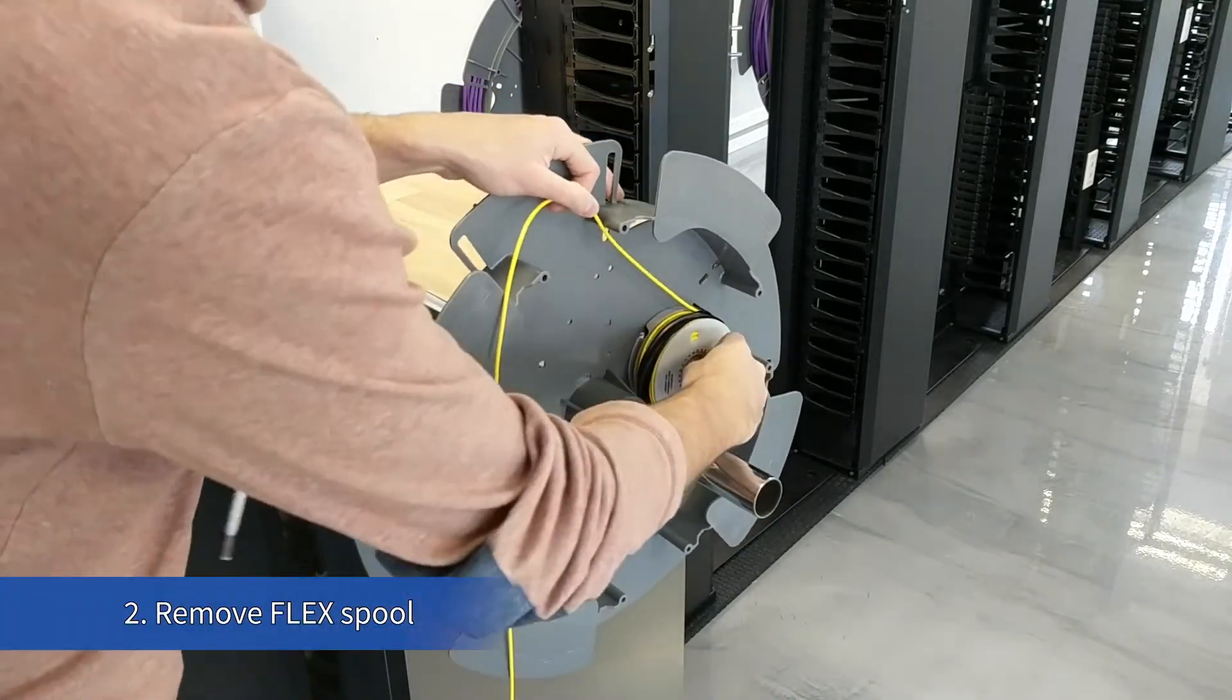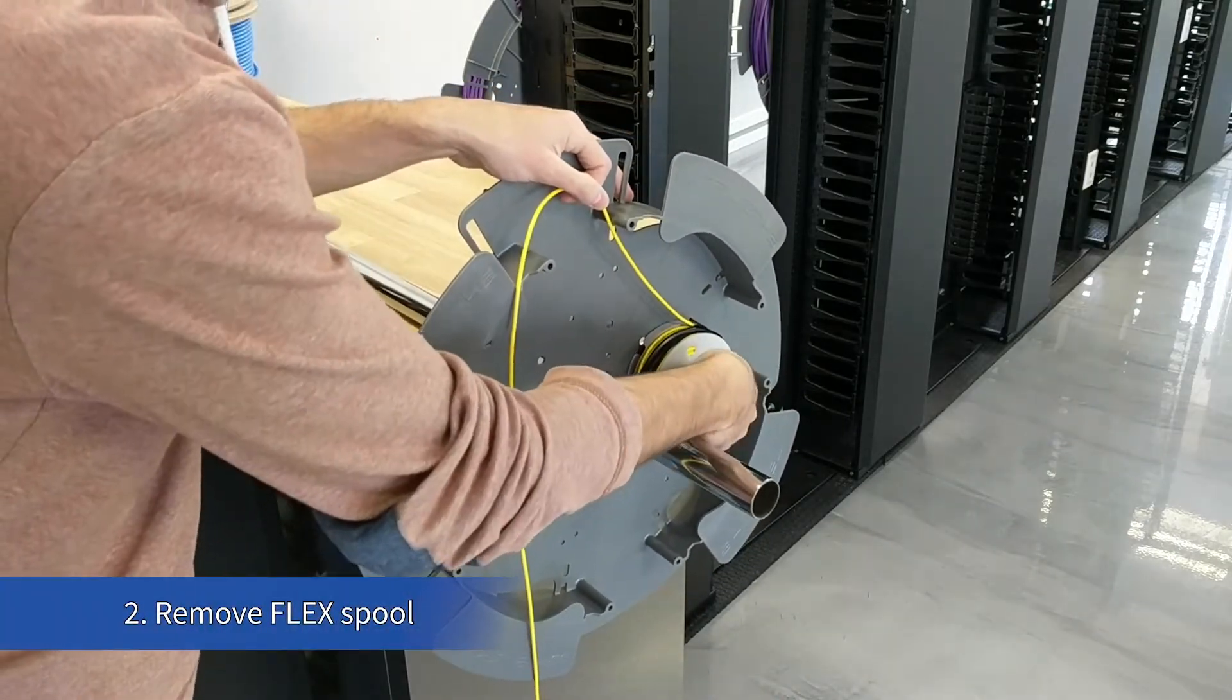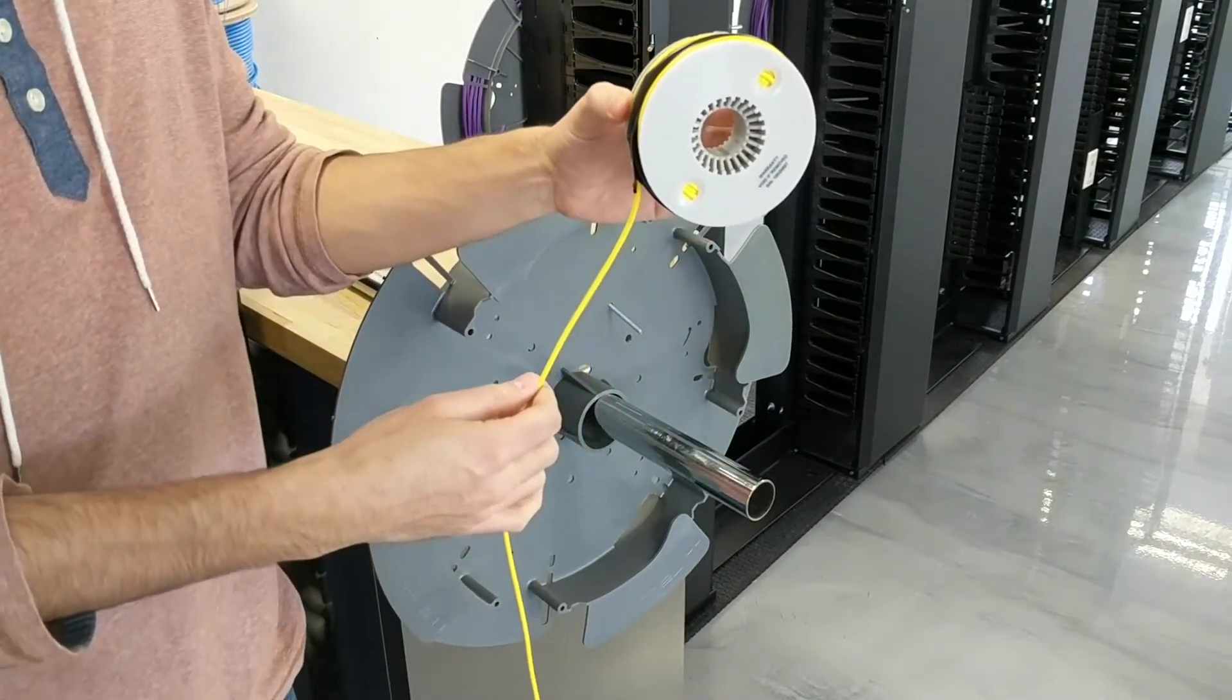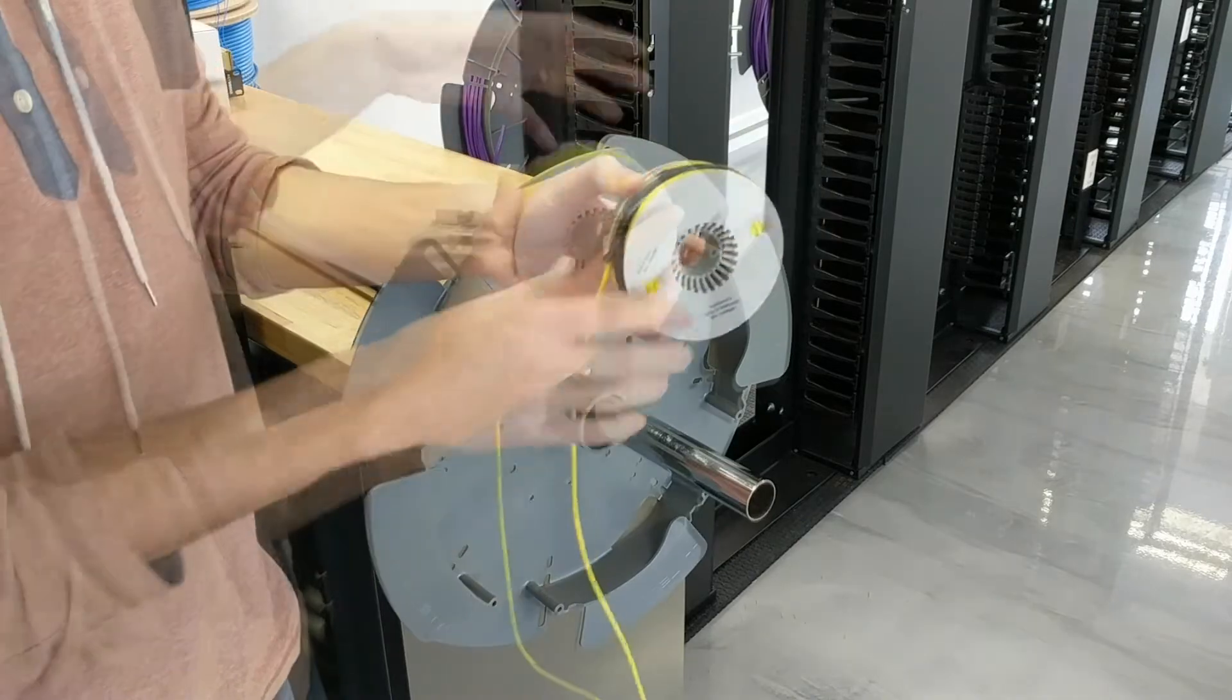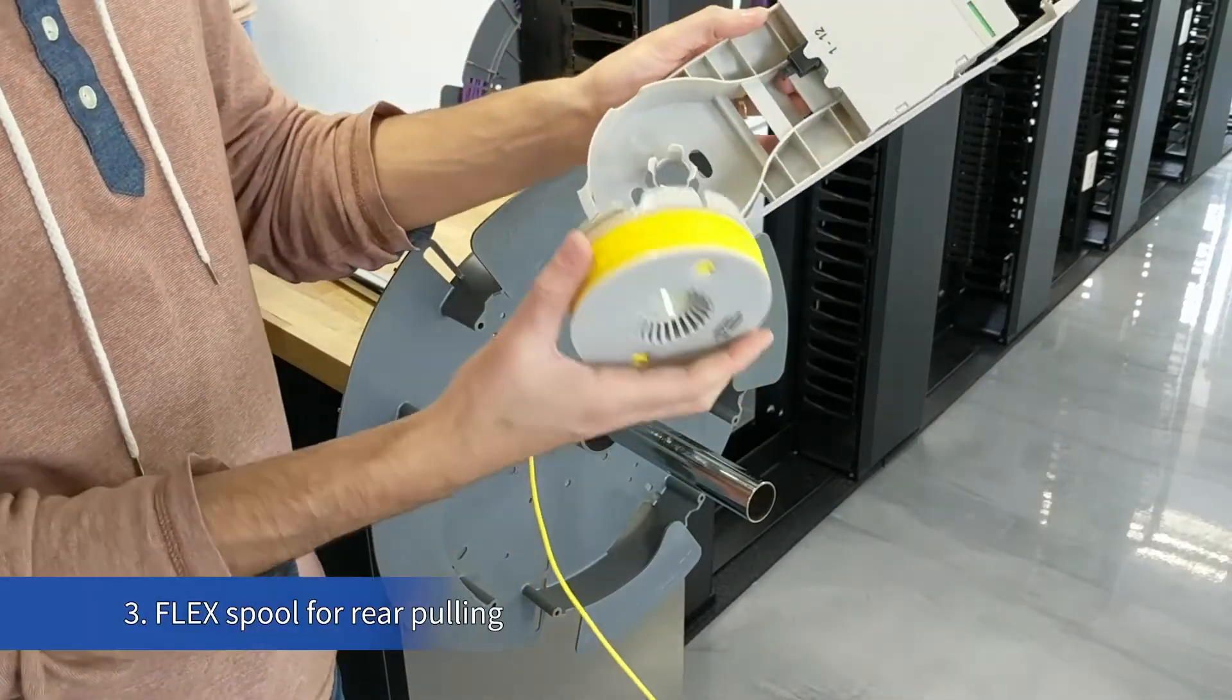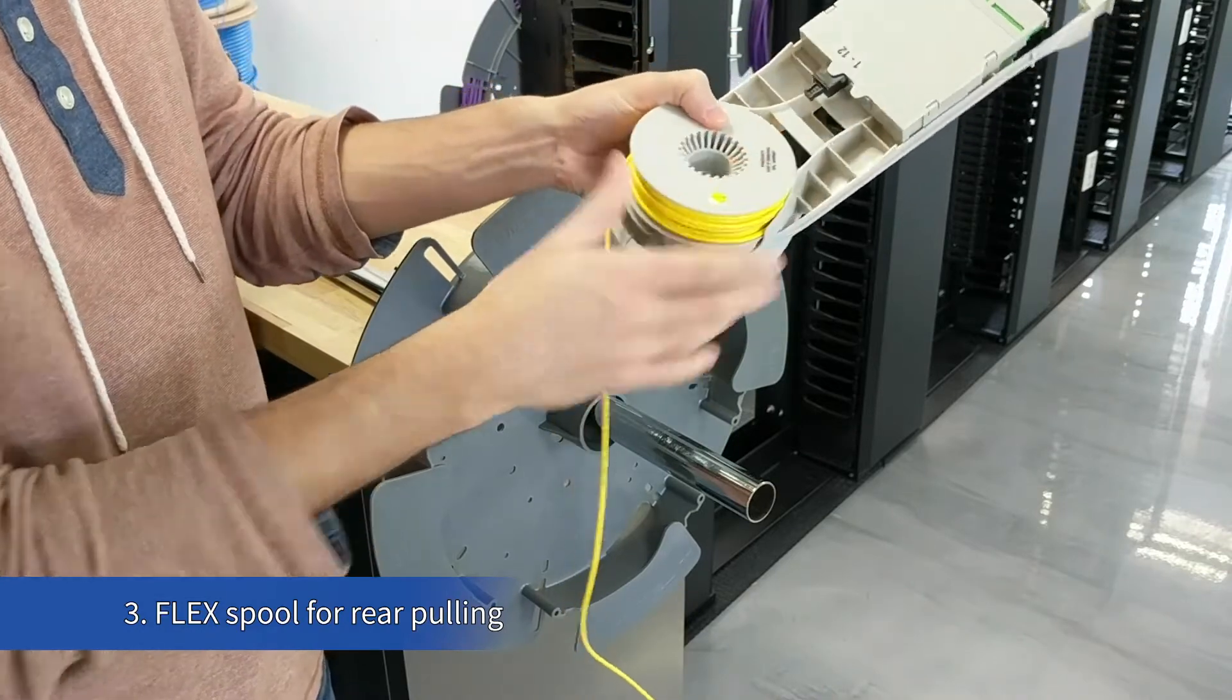Next, you can remove the flex spool by simply unscrewing the wing nut. This next demonstration will show you how to properly install a spool in the base of a FlexModule for the purpose of pulling the assembly from the rear. The first step is to position the spool with two holes facing outwards.